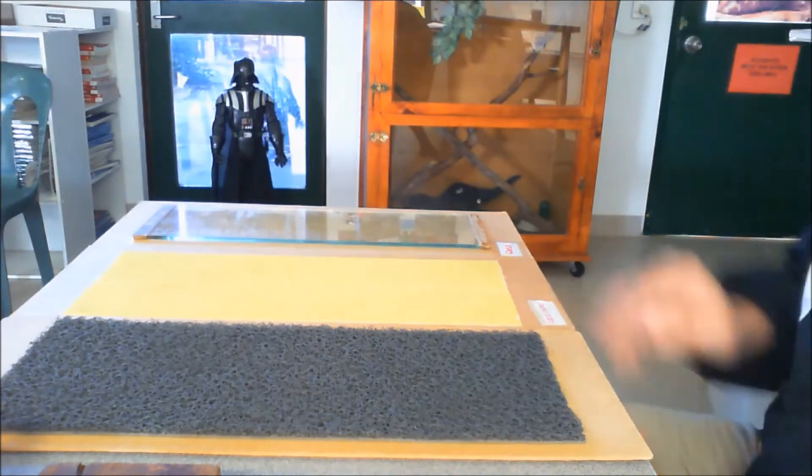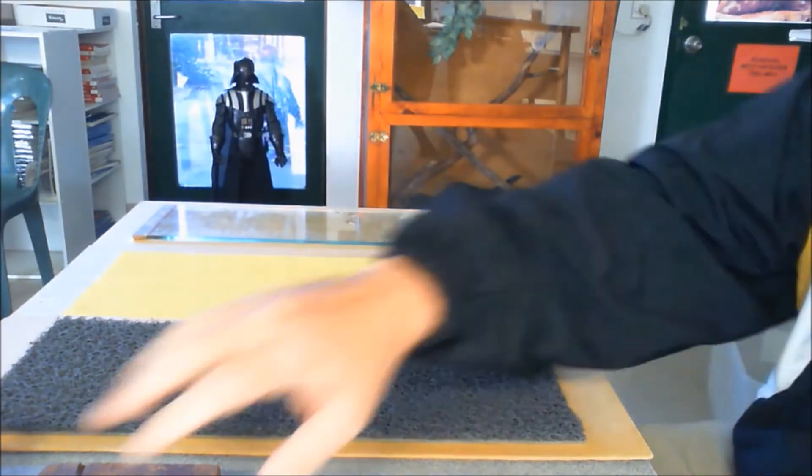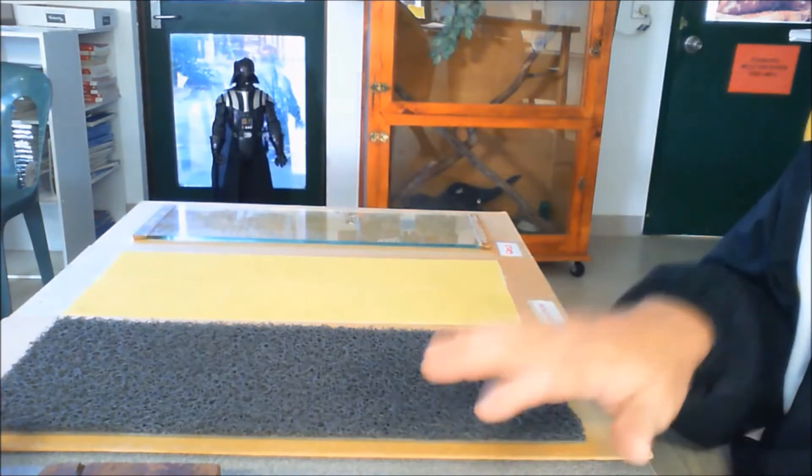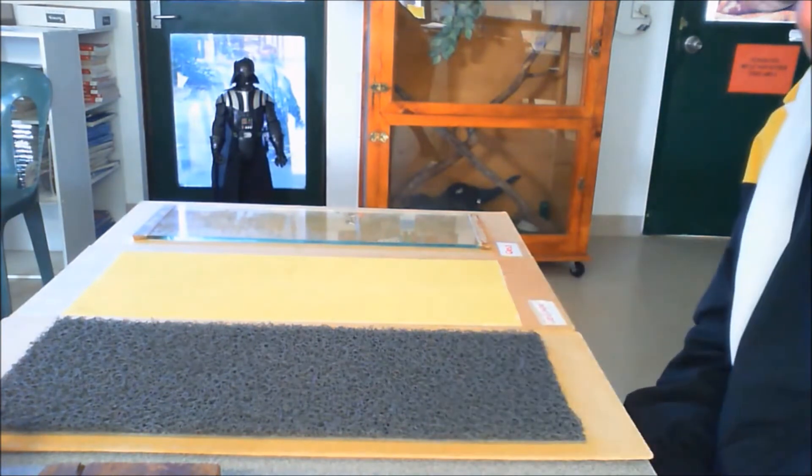One is the surface texture, so how rough the surface is. The other is surface area, how much of it is in contact, and then the load, which is how much weight is on top of it.